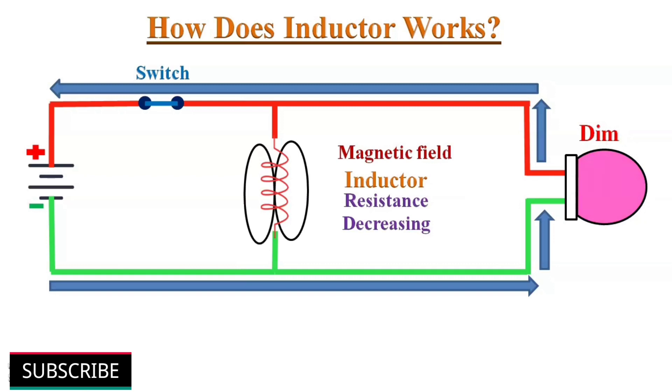The inductor's resistance will reduce and allow some current to flow through it. The lamp gets dimmer because of the reduced current flow through the filament. As the magnetic field keeps building in the inductor, its resistance will keep decreasing and allow more current to flow through it, and the lamp burns very dim.